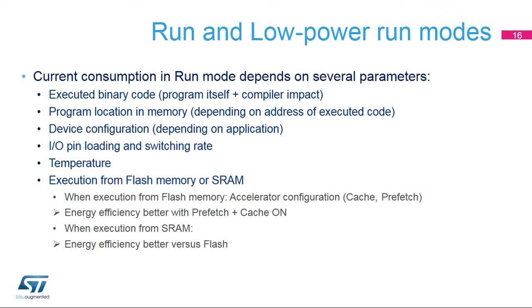The current consumption in run or low-power run modes depends on several parameters: the executed binary code, meaning the program itself plus the compiler impact; the program location in the memory; the device software configuration; the I/O pin loading and switching rate; and the temperature. The consumption also depends on whether the code is executed from flash memory or from SRAM. Energy efficiency is better when the flash prefetch and the instruction cache are enabled. Executing from flash consumes more than executing from SRAM, because the flash memory belongs to the VDD power domain, while the SRAM belongs to the VCore power domain.